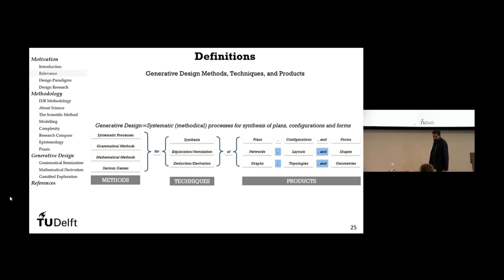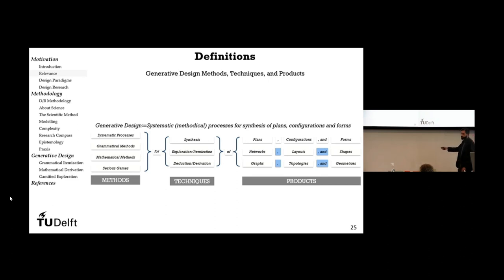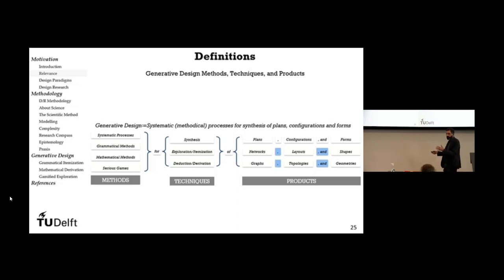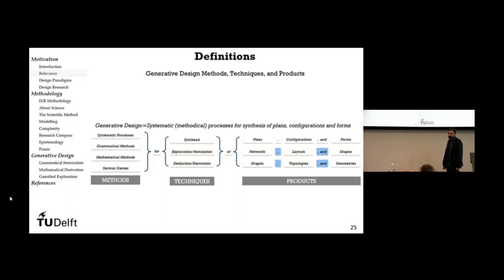Generative design is about the derivation of design products. These products can range from very abstract products — represented as plans, networks, and graphs showing connectivity between design elements — to configurations, layouts, or topologies, and at the most concrete end: forms, geometries, or shapes. People are really preoccupied with shapes and forms, but those earlier, more abstract levels are even more important — that's the hidden message.